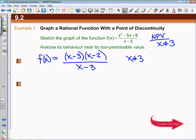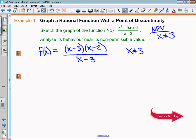That does not change the fact that x cannot be equal to positive three - that is a non-permissible value. What the next part of the question wants us to do is analyze the behavior near its non-permissible value. Now what we're going to do to graph this...